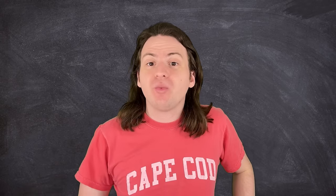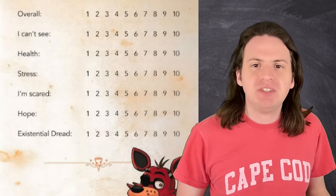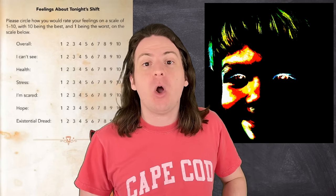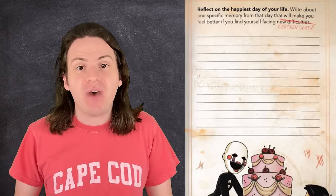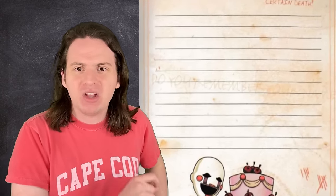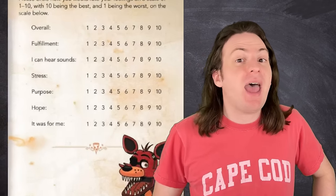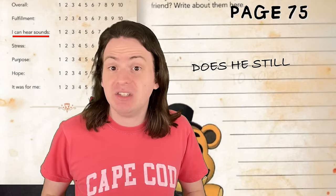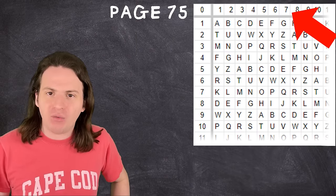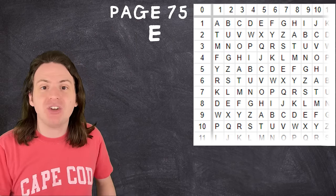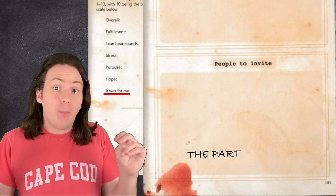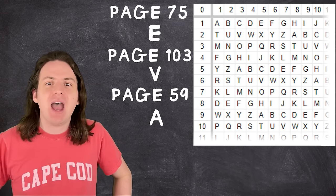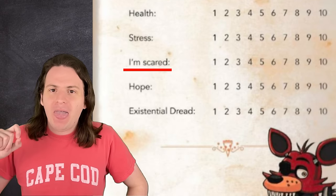According to a Reddit post by Wolfie170Kingdom, the altered text from the Crying Child isn't just random statements — they're responding to specific questions posed by Cassidy throughout the book. And if you plug in all the page numbers where those questions are from into the Foxy Grid, then you'll get the name of the Crying Child. On page 89, the Crying Child says 'I can hear sounds,' which is in response to page 75 where Cassidy asks 'does he still talk to you?' So if you go over 7 and down 5, you get the letter E. 'It Was For Me' on page 89 responds to 'The Party Was For You' on page 103, 'I Can't See' responds to 'What Do You See' on page 59, and finally, 'I'm Scared' on page 109 responds to... nothing.